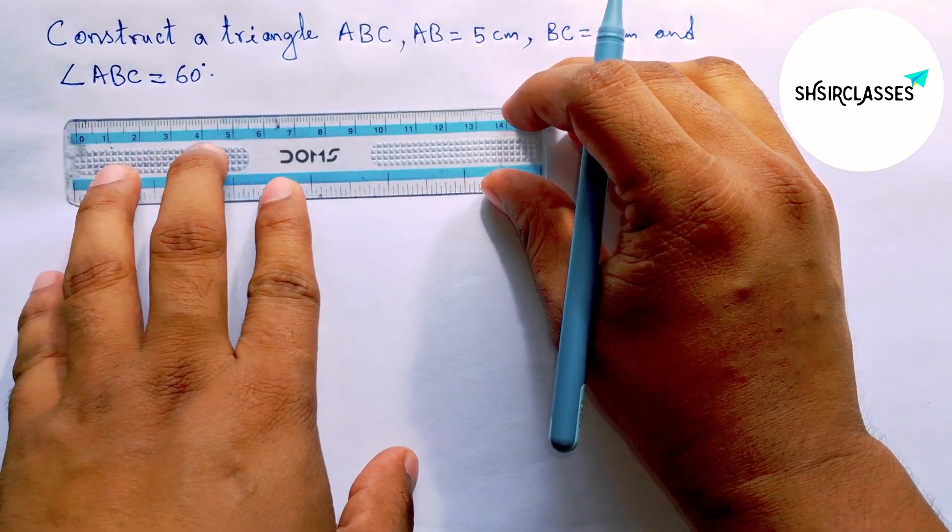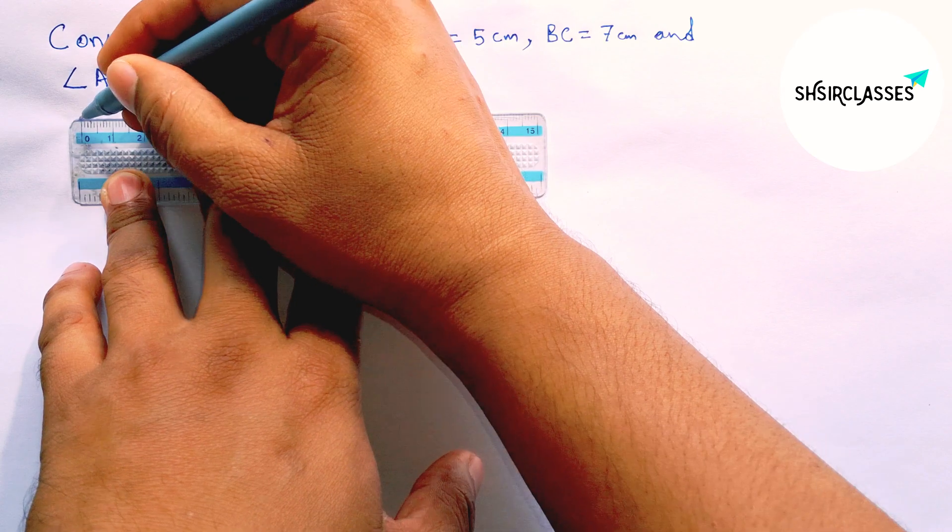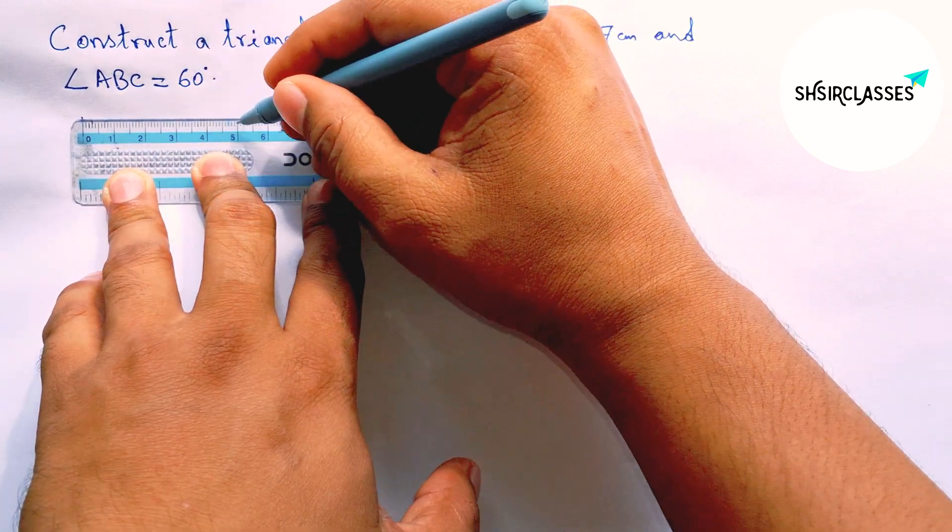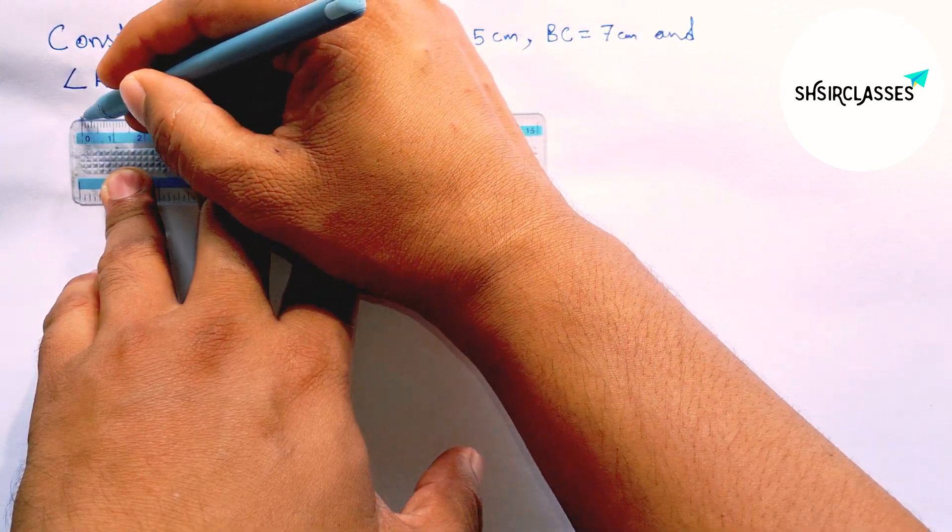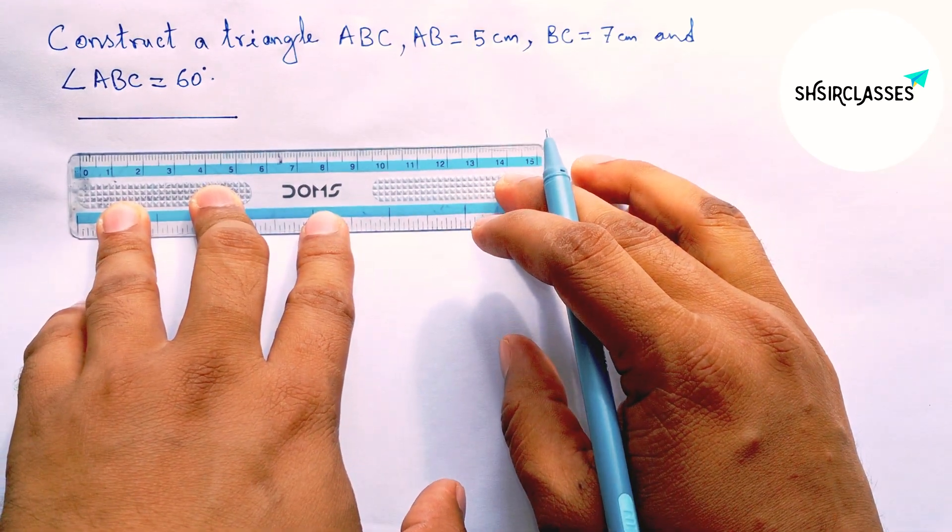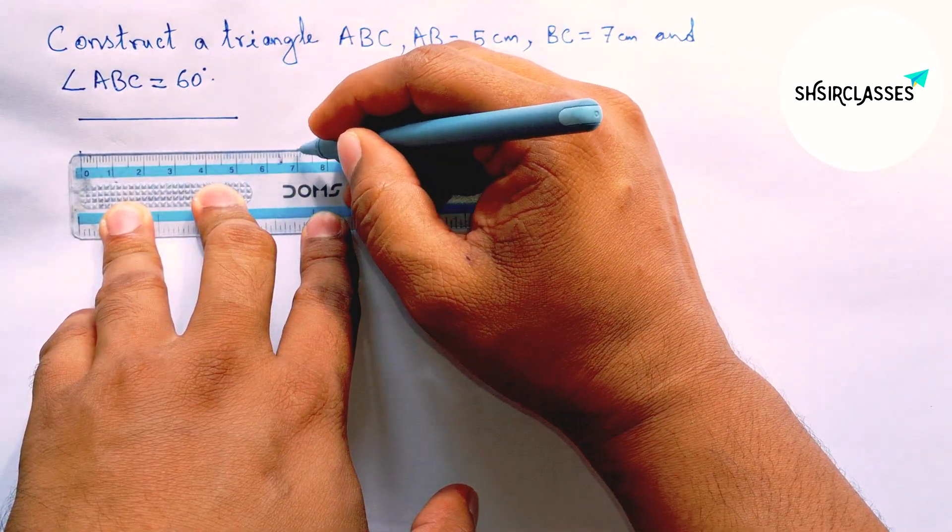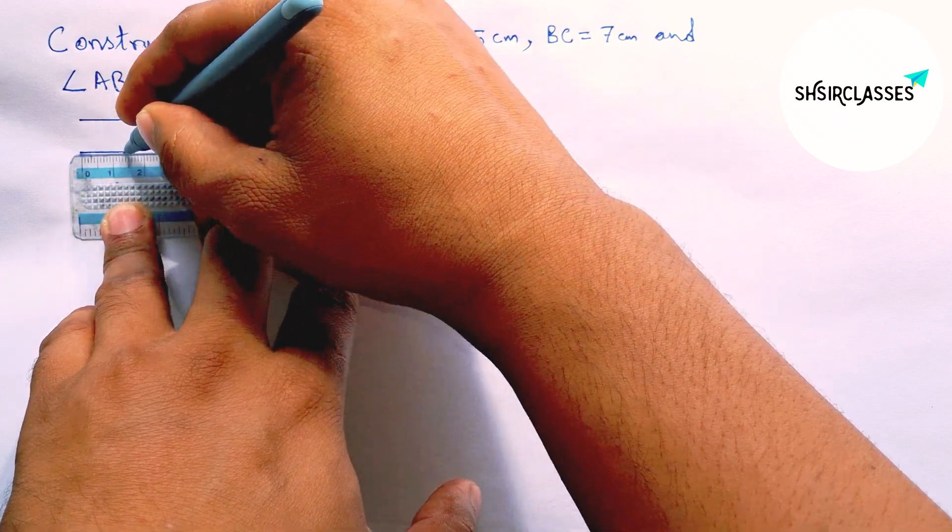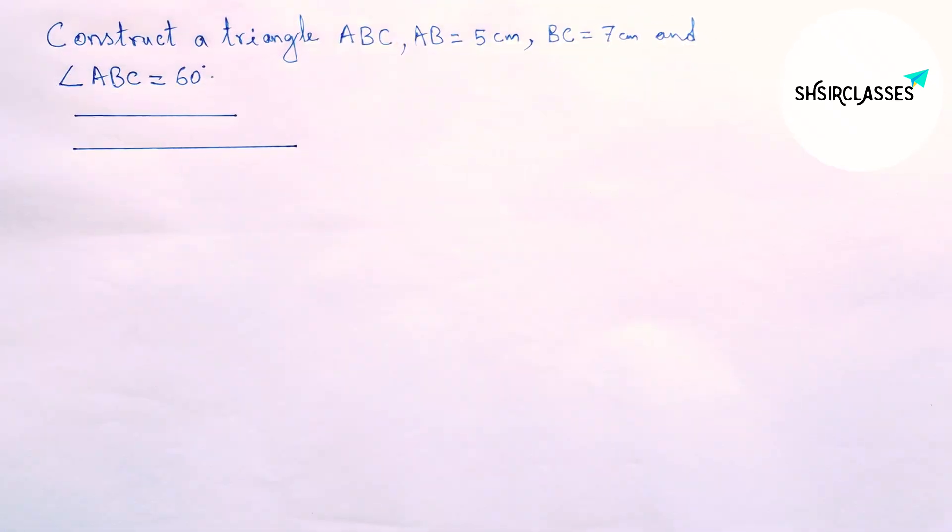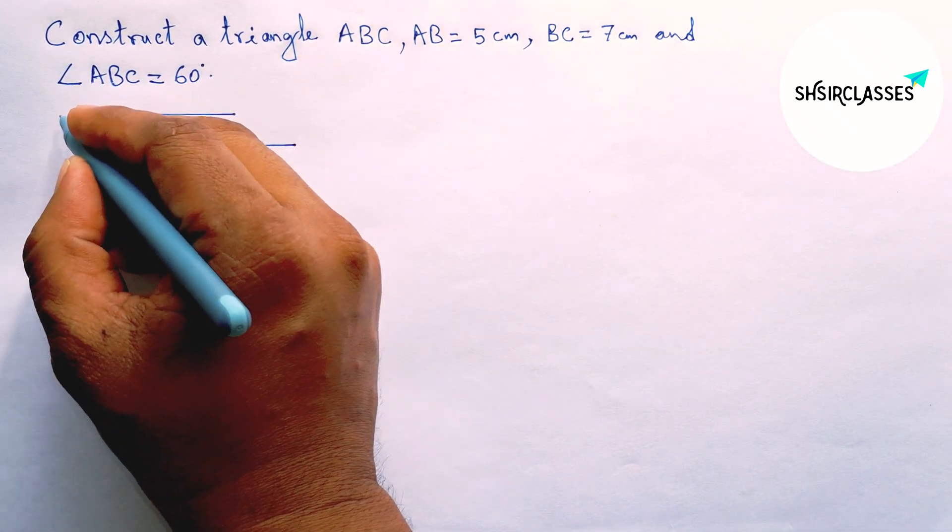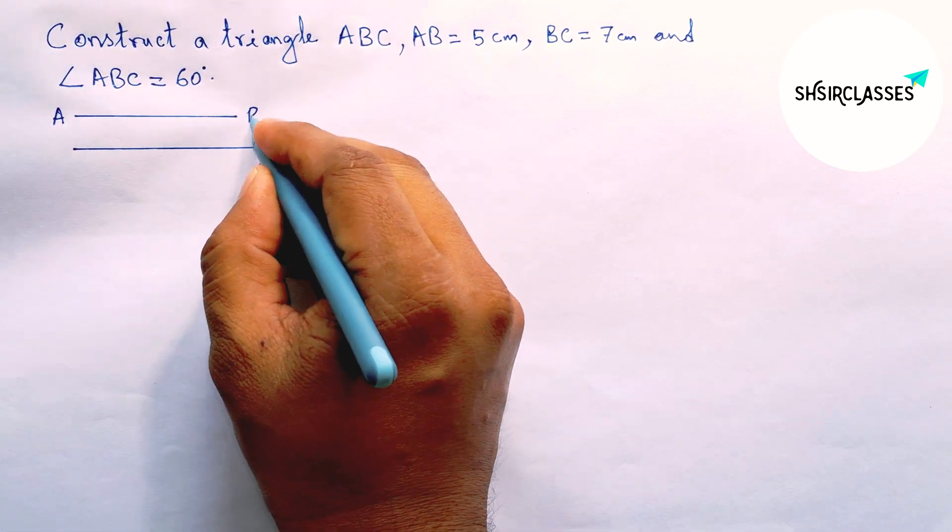First of all, let us draw the given two sides of the triangle. First, drawing a 5 centimeter line segment. Drawing another 7 centimeter line segment. Now labeling here, this is AB.